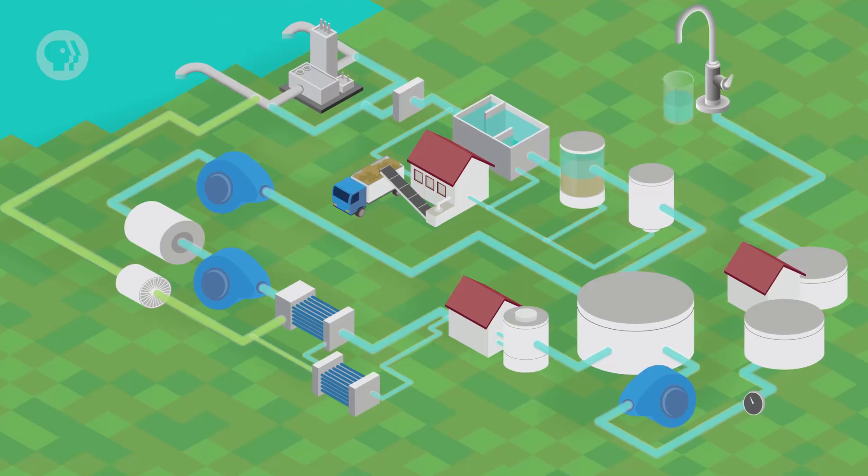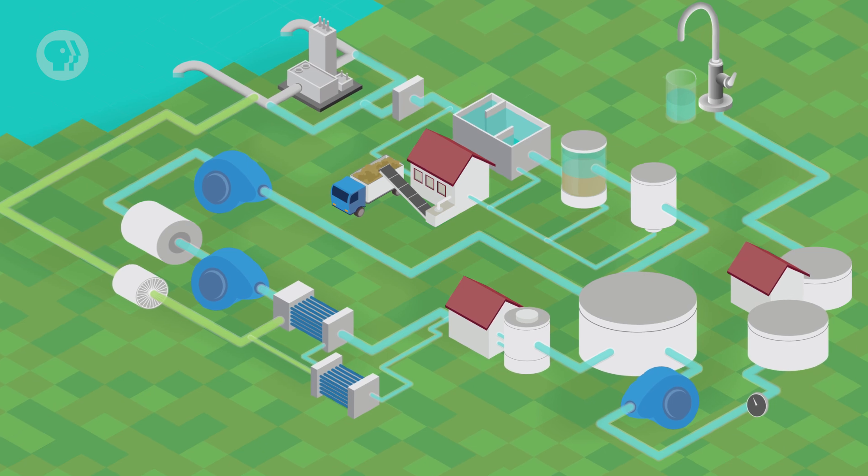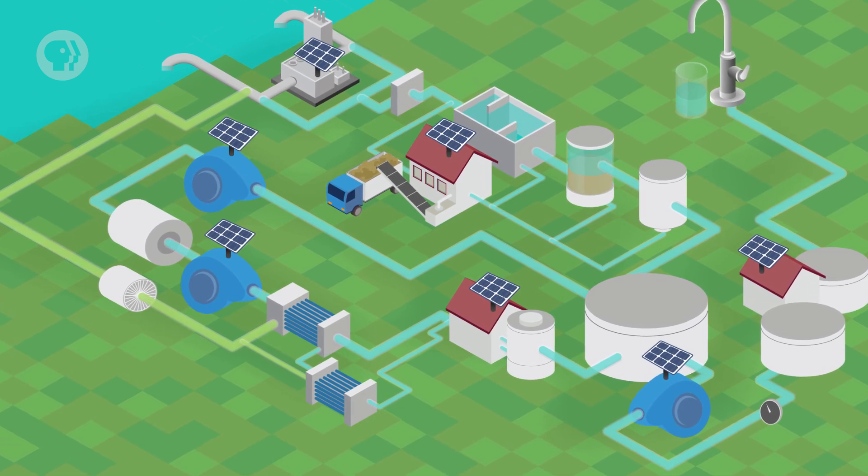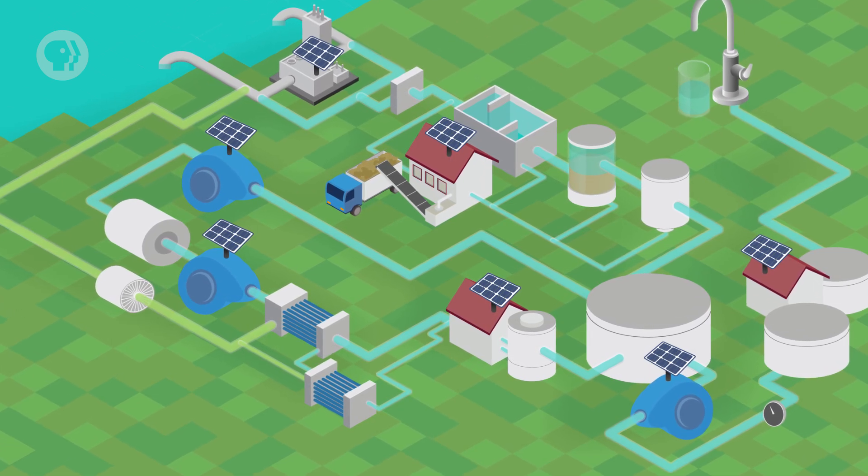But a good engineer's job doesn't end there. Once your plant is up and running, new issues might arise that need to be resolved. Maybe the price of electricity spikes a few years down the line, threatening to shut down production. But you find out that the cost of solar technology has decreased in the meantime, which allows you to add a solar farm to directly power the plant at a reduced cost. After all that work, your plant will be capable of safely and affordably delivering drinkable water for everyone nearby.